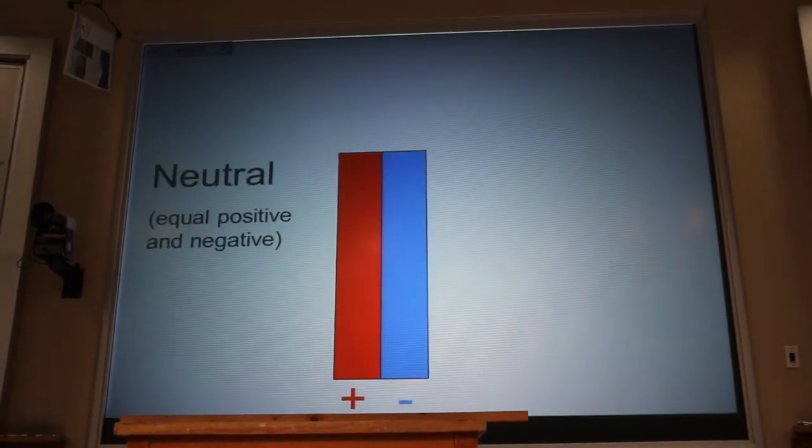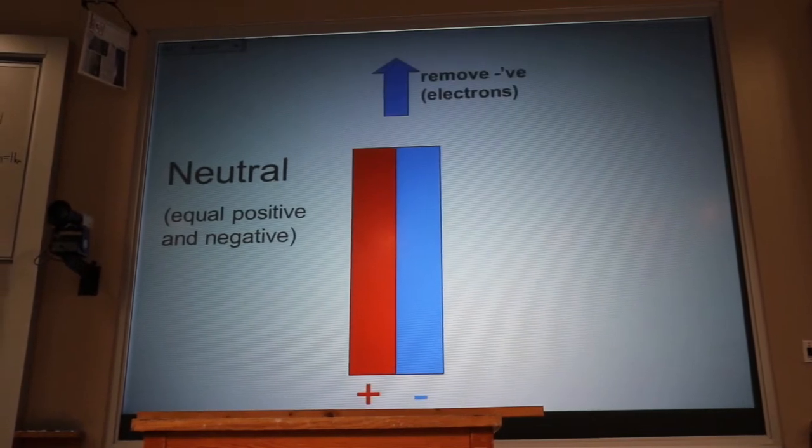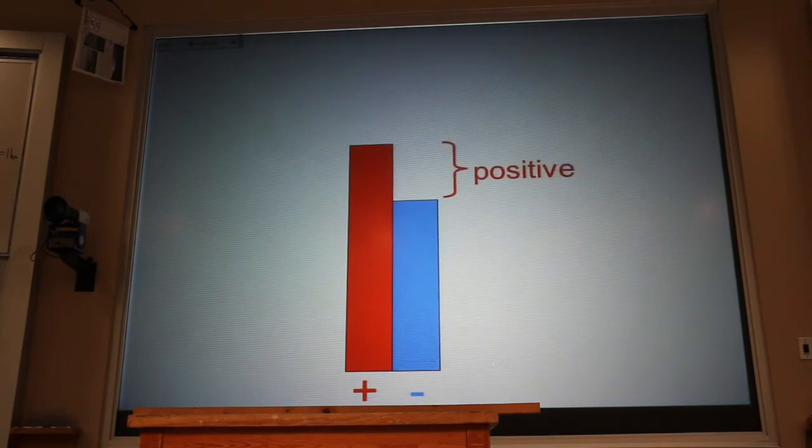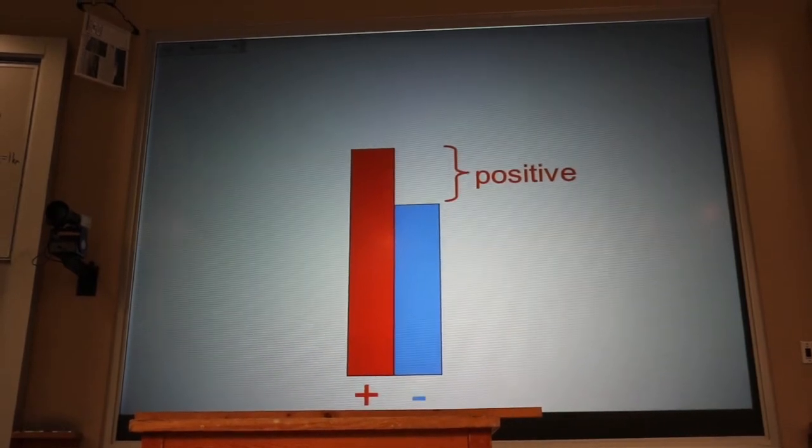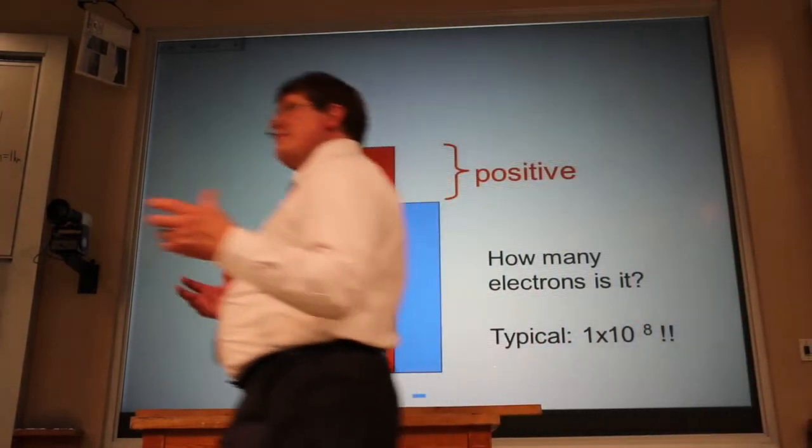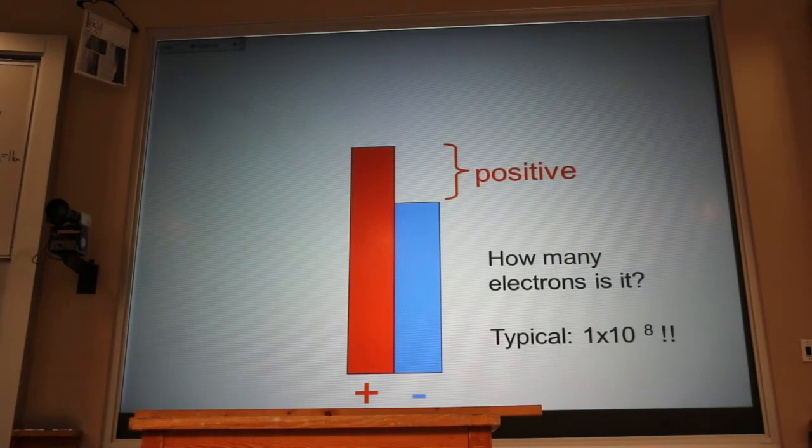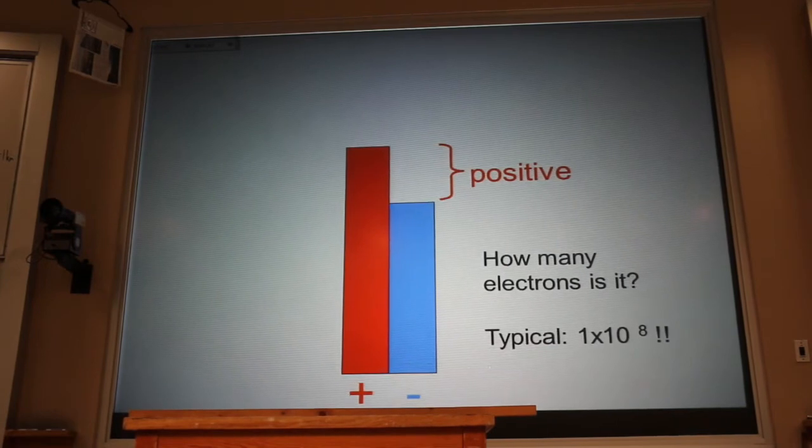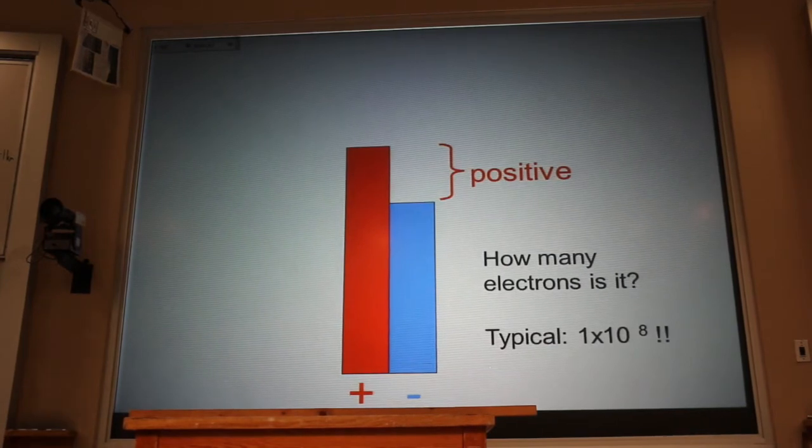If instead we start with a neutral object and we remove electrons, in that case we leave bare protons, naked protons behind, and that gives us a net positive charge. Now the question is, how many electrons do we typically remove when we rub a rubber rod like that? Well typically it's on the order of 100 million. Now any of you that have been following the newspapers, the powerball is about 400 million. So that gives you kind of a scale of how many electrons we're removing when we rub that glass rod there. If you equate each dollar with an electron, you're rich.